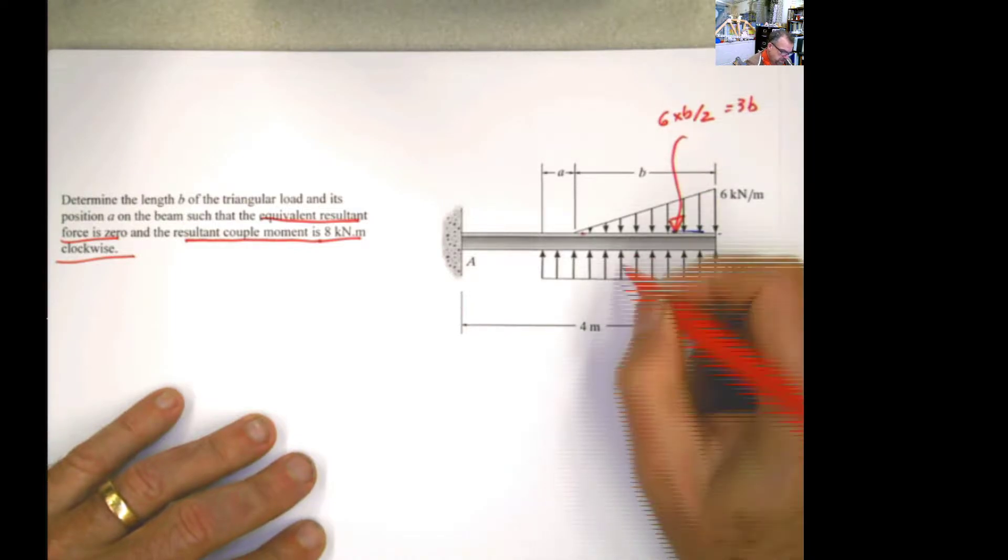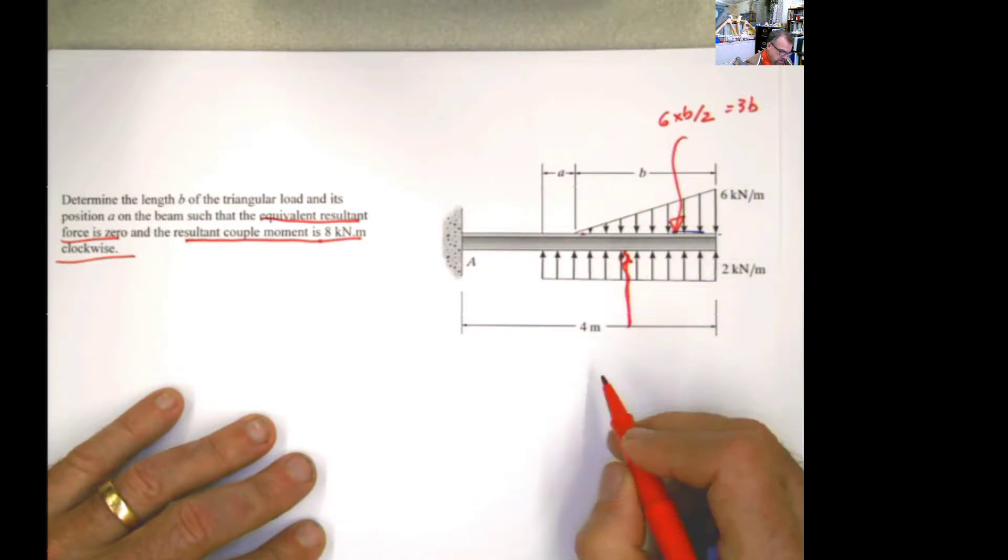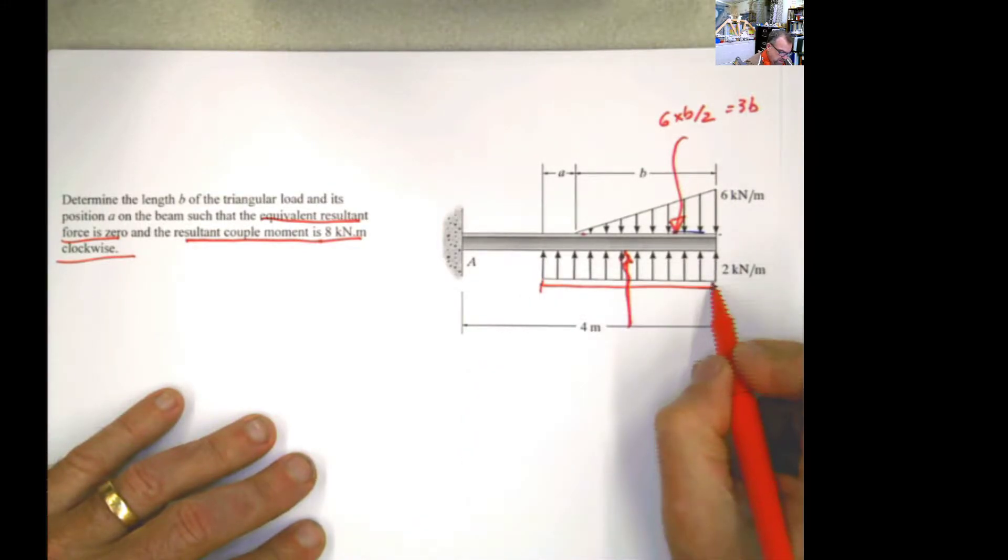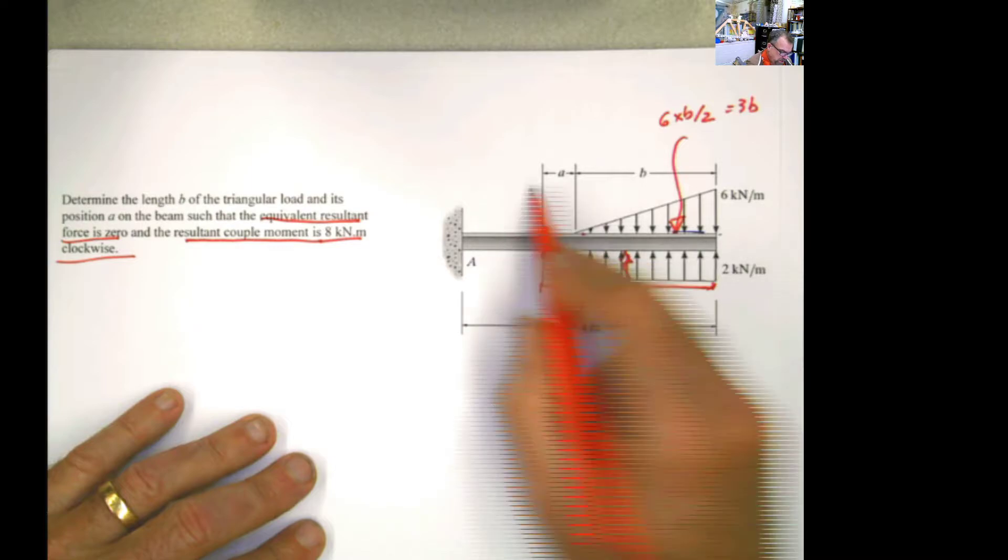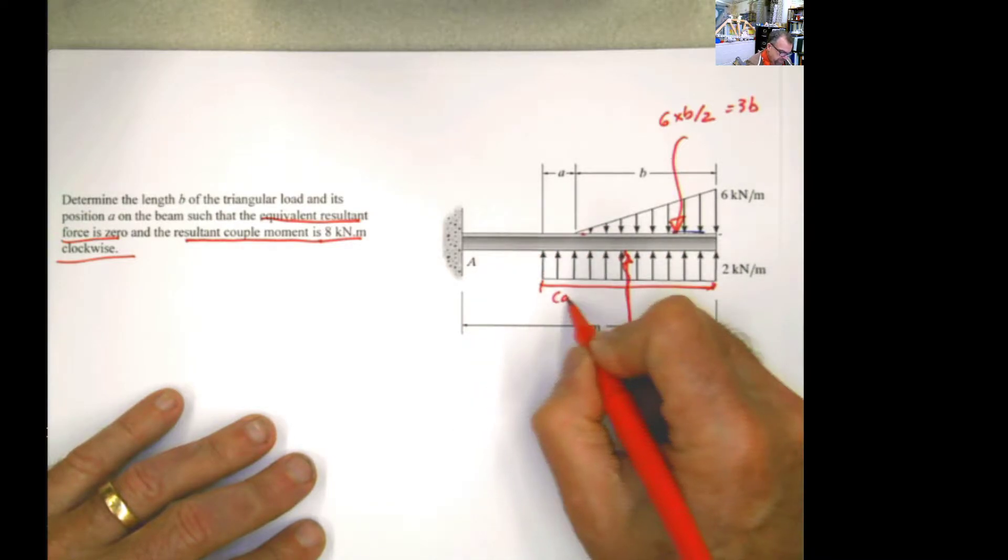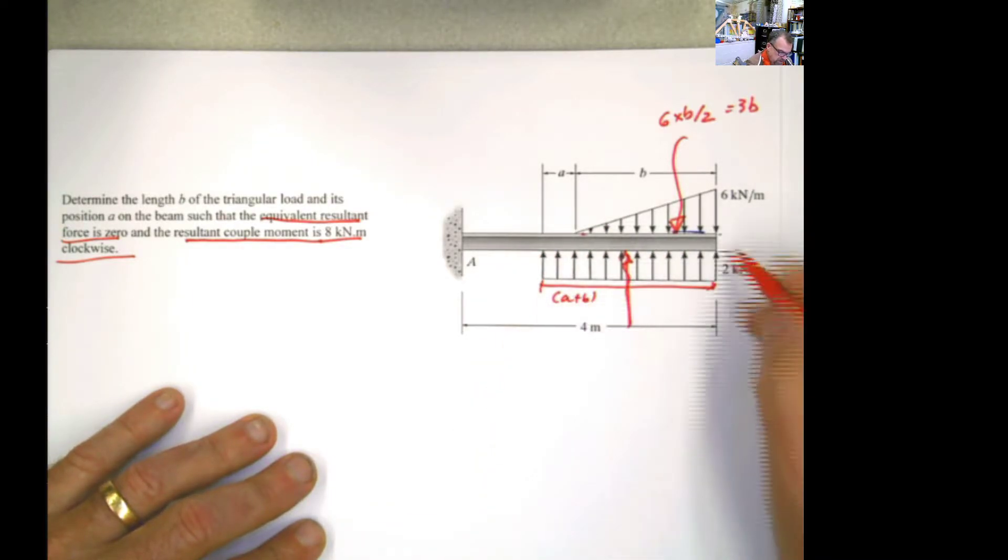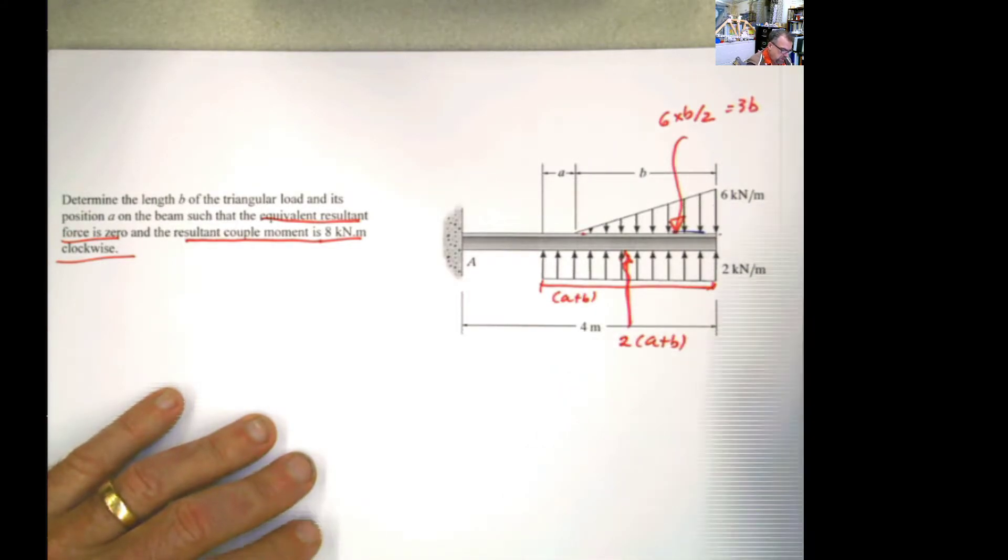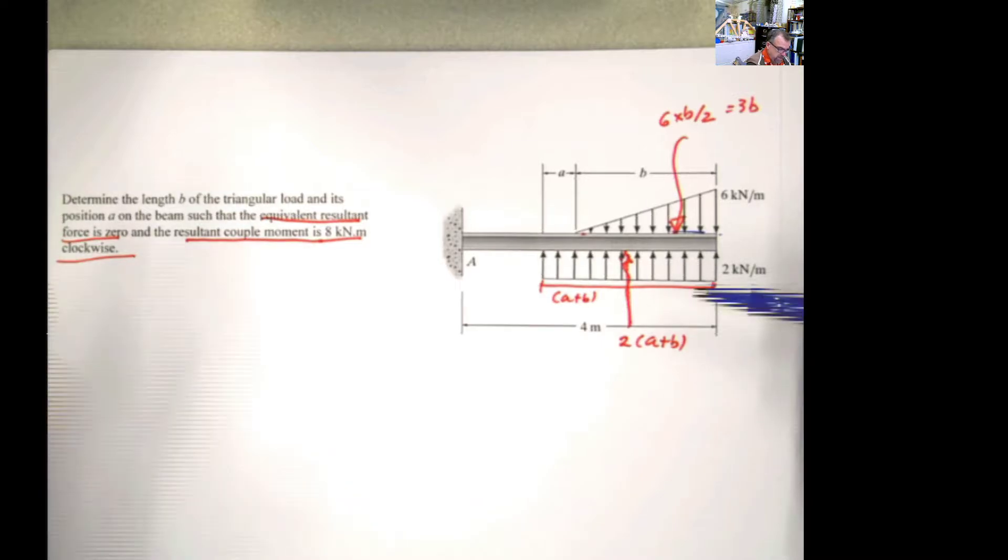And you do the same thing here with this one. It's just the area of the rectangle. And this distance will be b plus a or a plus b. And this height is 2. So this will be 2 times a plus b.